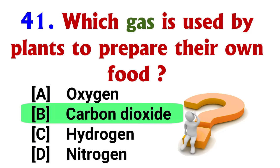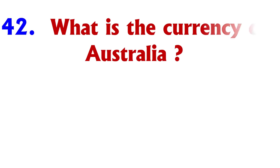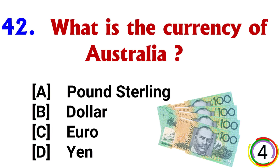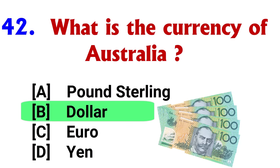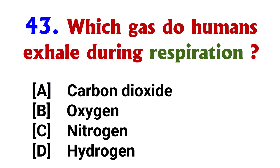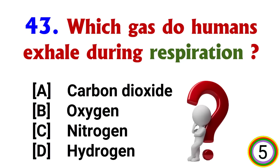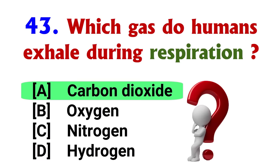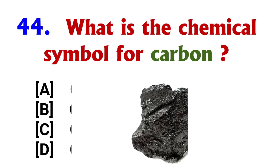Which gas is used by plants to prepare their own food? Answer: option B, Carbon Dioxide. What is the currency of Australia? Answer: option B, Dollar. Which gas do humans exhale during respiration? Answer: option A, Carbon Dioxide.